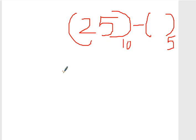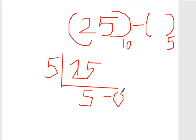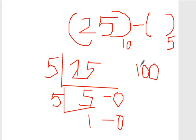So what you do is just take this 25 and divide it with the base, which is 5 for us. 5 into 25 is 5, so you get remainder 0. Again you divide by 5. 5 into 5 is 1, remainder 0. So the answer is 100 to base 5.